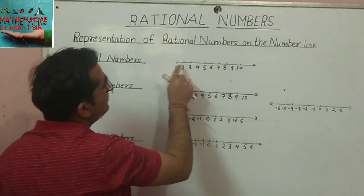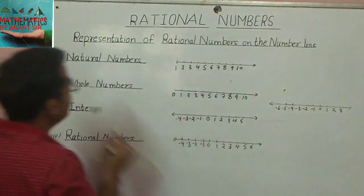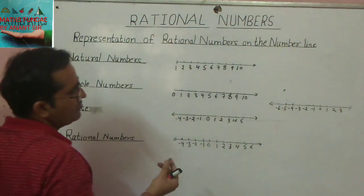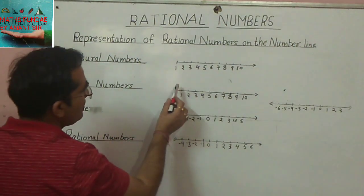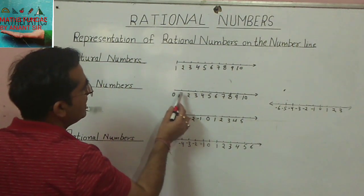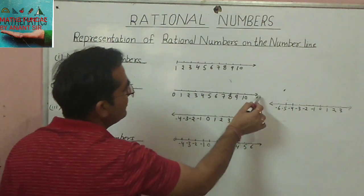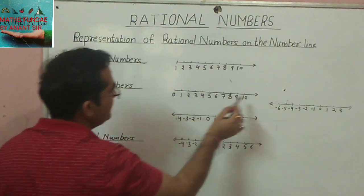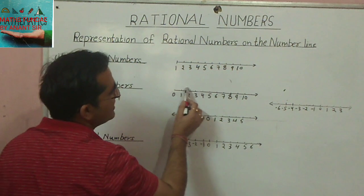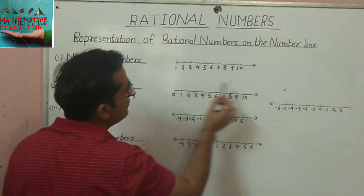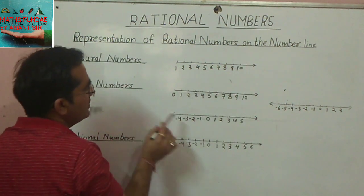In whole numbers, we have zero and all the natural numbers. We write this number line like: zero, one, two, three, four, and so on up to infinity. The line extends indefinitely to the right of zero; nothing is on the left of zero.